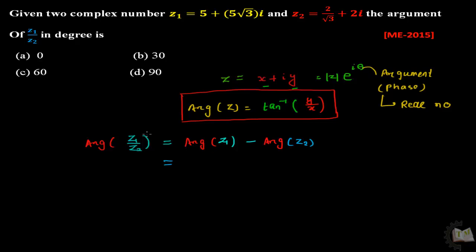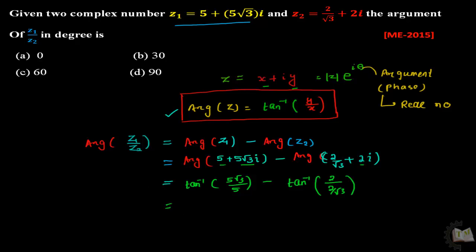First find the argument of Z1. The value of Z1 equals 5 plus 5 root 3i, minus argument of Z2 which equals 2 divided by root 3 plus 2i. Simply use this formula, that is tan inverse y divided by x. You can write it as tan inverse, the value of y is 5 root 3 divided by 5, minus tan inverse 2 divided by 2 by root 3. And if you simplify this you will get.